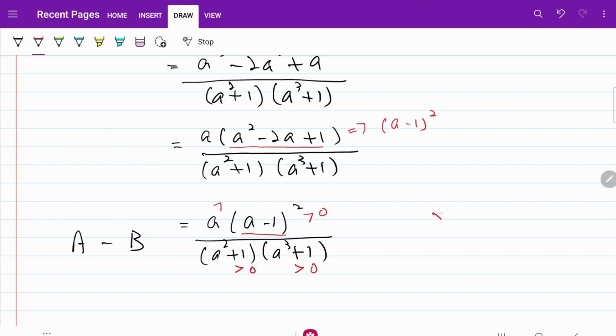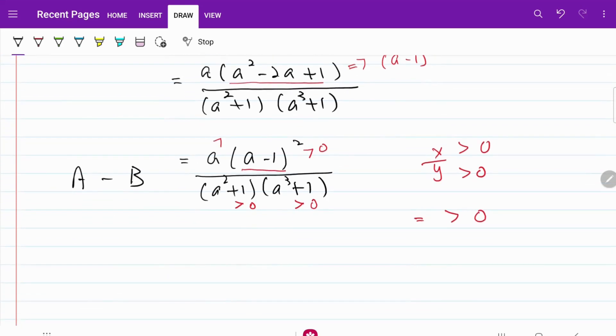So if we have two numbers x and y both are bigger than 0, the end result of them dividing each other will be bigger than 0 as well. So the only conclusion that we can draw from here is A minus B is bigger than 0.